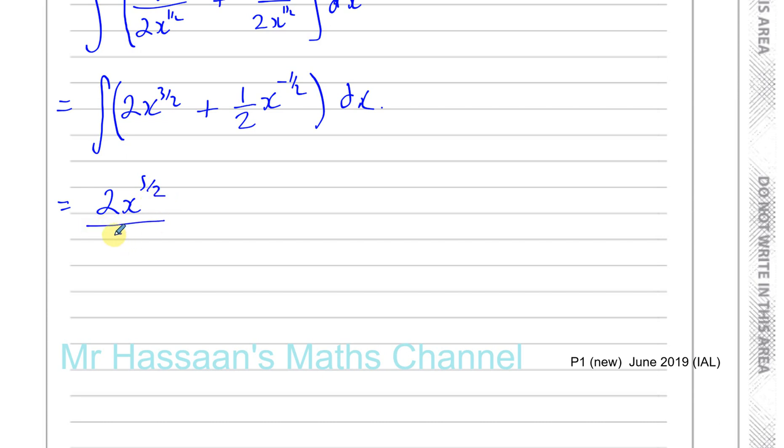Okay, plus, and you've got a half times, and you've got x, now you add 1 to the power, so it gives you a half, divided by the new power, which is a half, and you're plus c. Don't forget the plus c, very important.